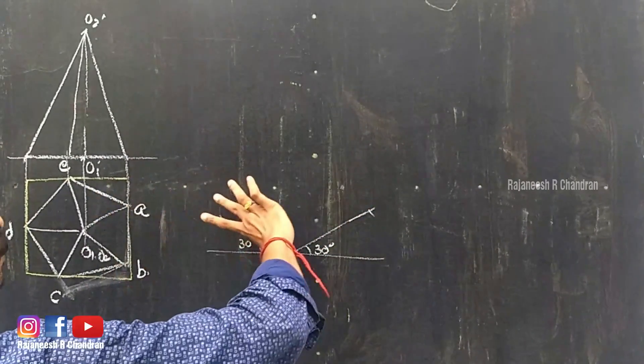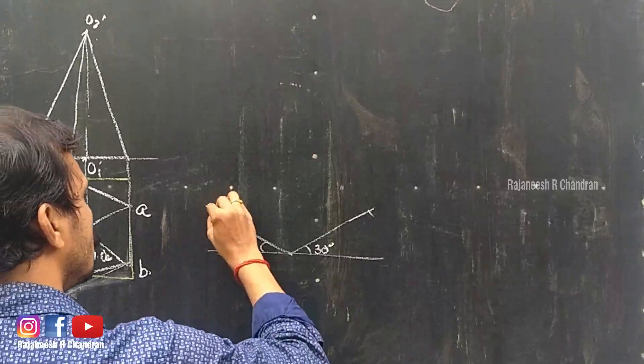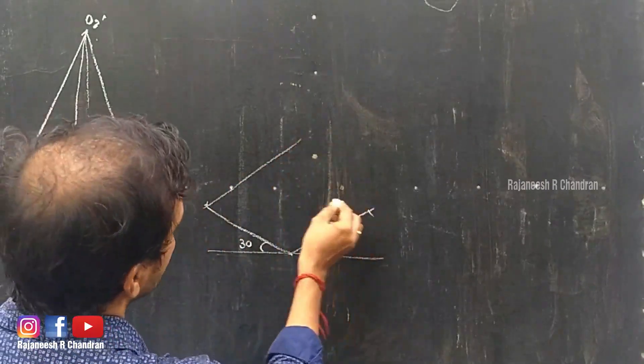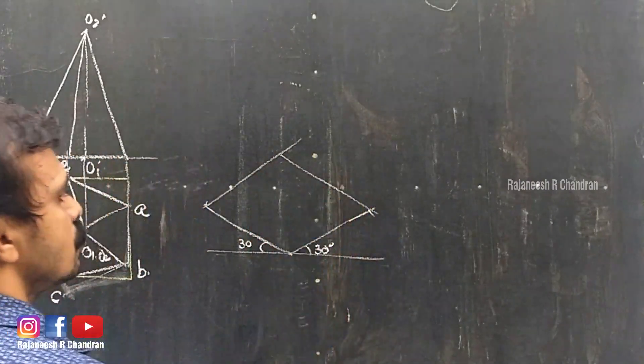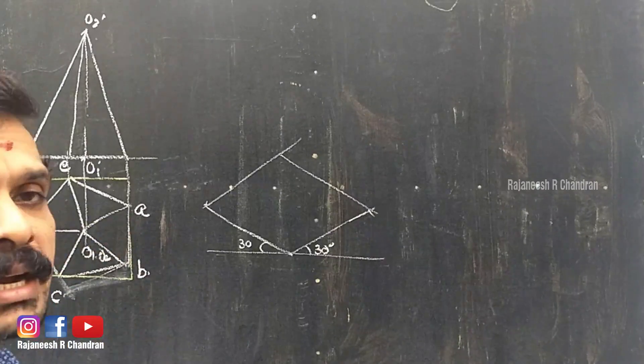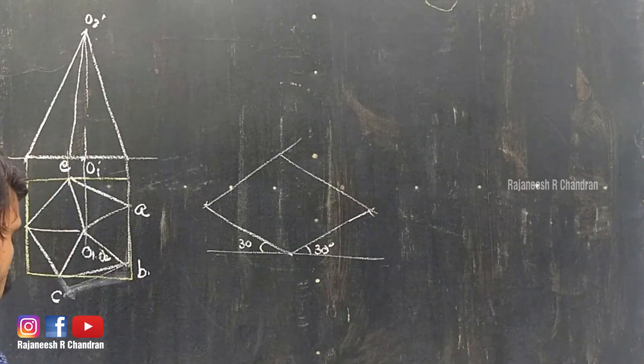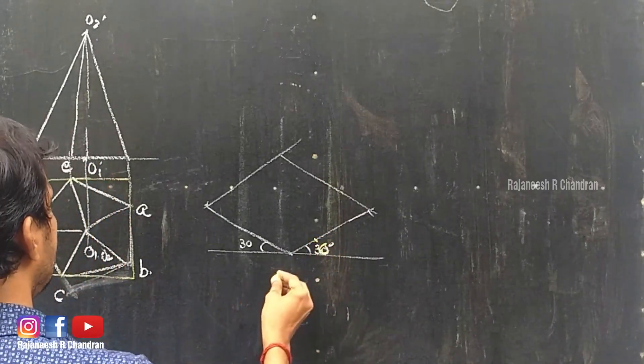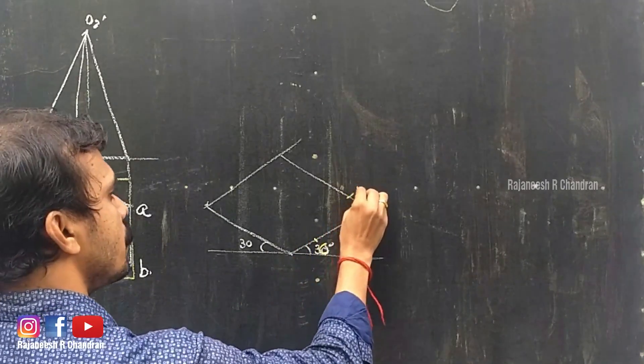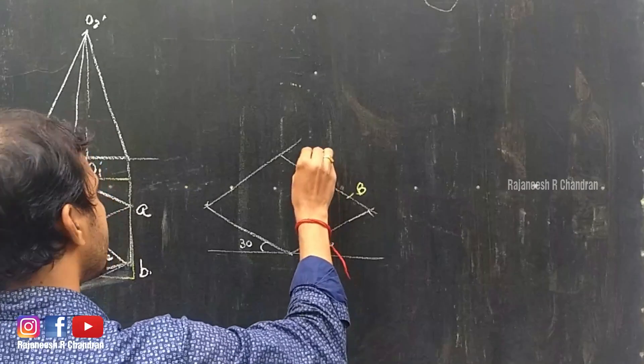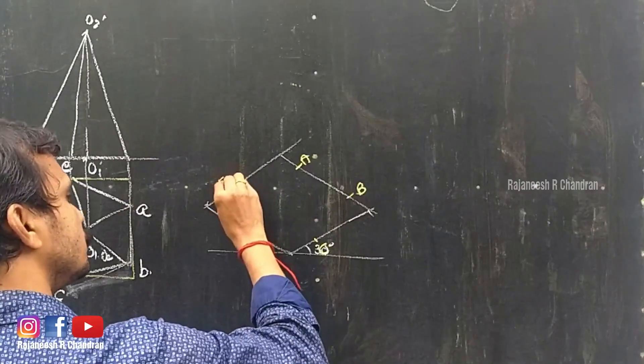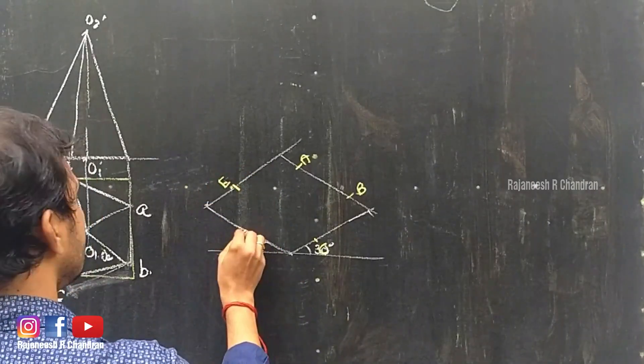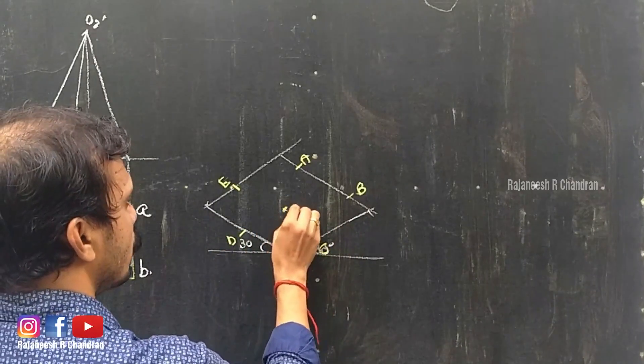Measure this value and mark here. All these things we have done for prisms also. The rectangle is converted into isometric projection. Now we can obtain the points C, B, A, then E, then D.